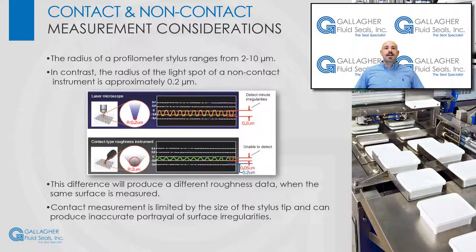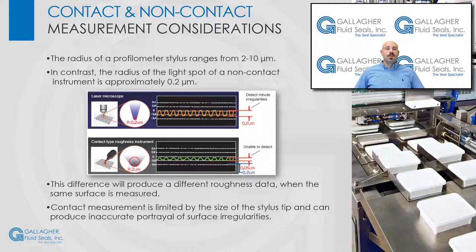Finally, let's discuss some considerations between contact and non-contact measurement methods. The radius of a contact profilometer stylus tip ranges between 2 and 10 micron. In contrast, the radius of a spot of light emitted from a non-contact profilometer is approximately 0.2 micron. This difference alone can produce conflicting measurement data, even when the same surface is measured. Also, bear in mind, with contact measurements you are limited by the radius of the contact tip. Therefore, the profile traces can portray inaccurate views of surface irregularities.